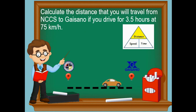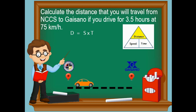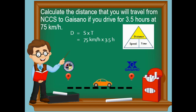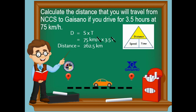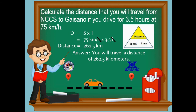Let's go back to our problem: calculate the distance that you will travel from North City Central School to Gaisano if you drive for 3.5 hours at 75 kilometers per hour. Using our formula, distance equals speed times time. The value of our speed is 75 kilometers per hour, multiplied by our time of 3.5 hours. 75 times 3.5 is equivalent to 262.5. Cancel the same unit of measurement — per hour and hour — and you will have the remaining unit, kilometers. So the final answer: you will travel a distance of 262.5 kilometers.